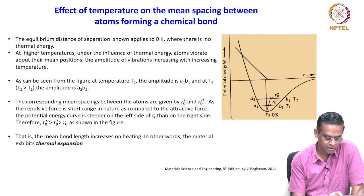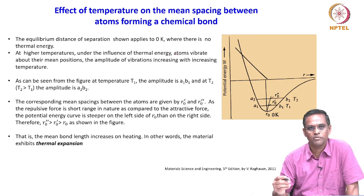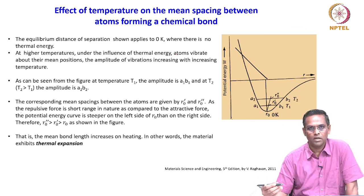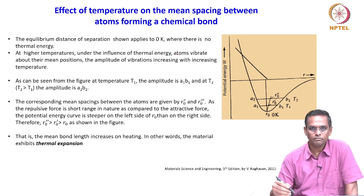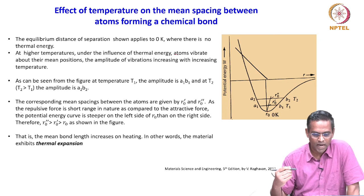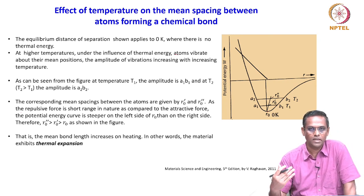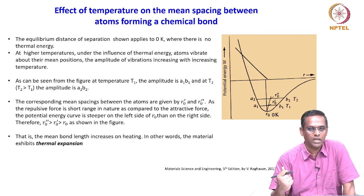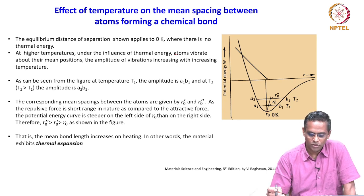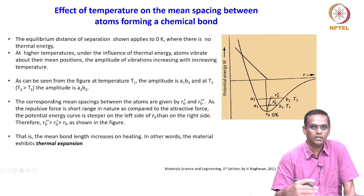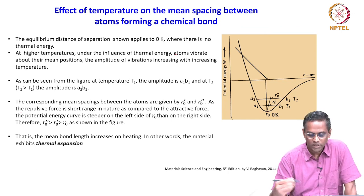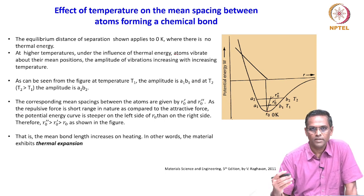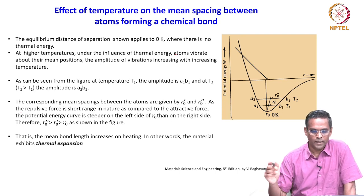This asymmetric nature of the curve gives a very important idea: the mean bond length increases on heating. In other words, the material exhibits thermal expansion. So, the most fundamental property of a material — thermal expansion — has its atomic basis or chemical bond basis. We are showing why thermal expansion happens and how the mean equilibrium distance keeps increasing with increasing temperature.